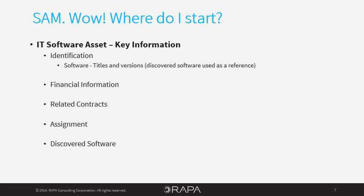For this reason, use the discovery information as a reference when determining what should be managed. Depending on the discovery tool, not all discovered titles will need to be managed. Identifying your license purchases can be done using a combination of manufacturer part number and the associated purchase order number. The key here is to be able to substantiate the information you capture in your inventory to what was purchased. The manufacturer part number will also help you identify what you are entitled to and your compliance responsibilities.